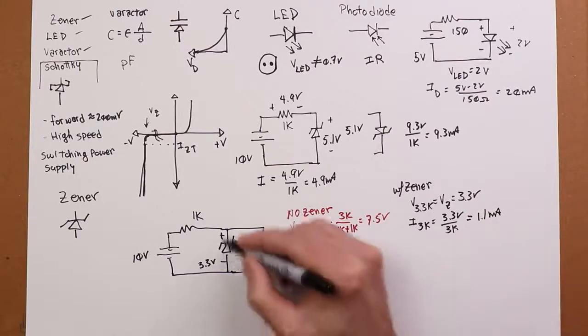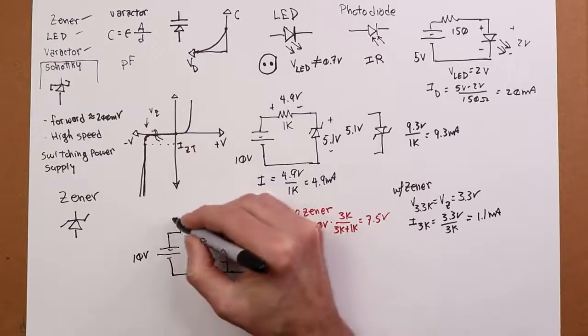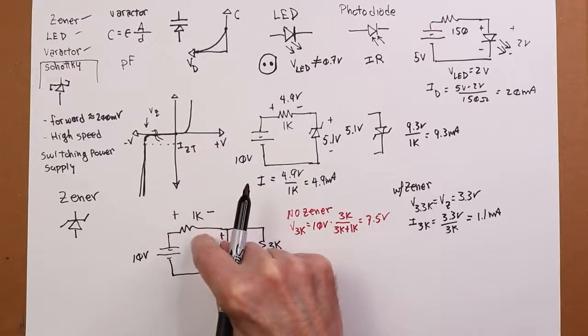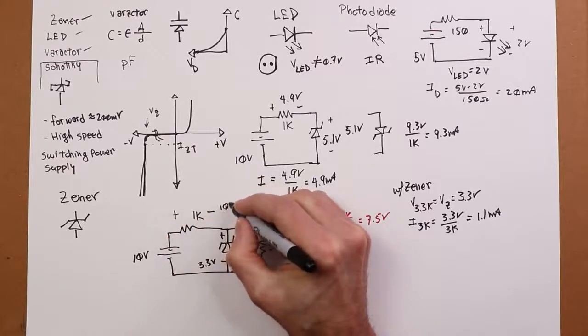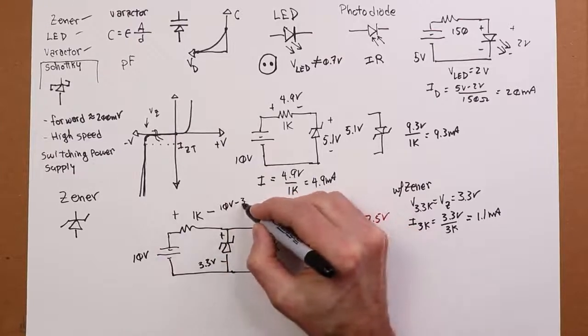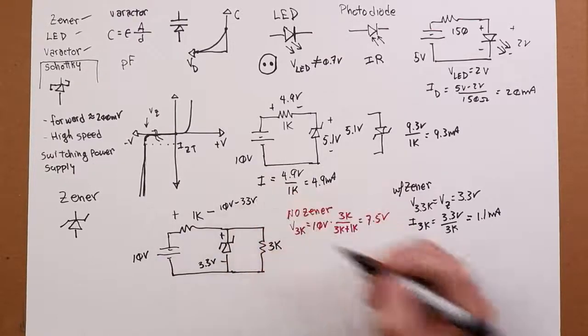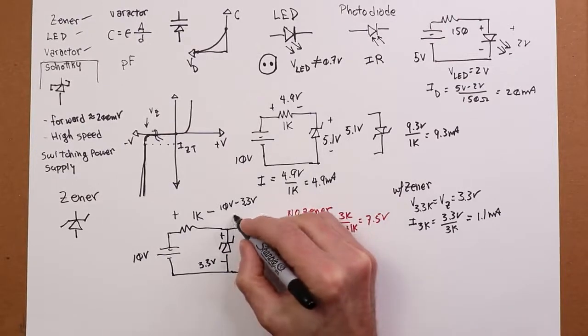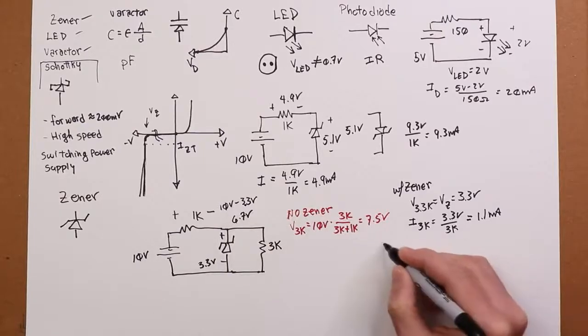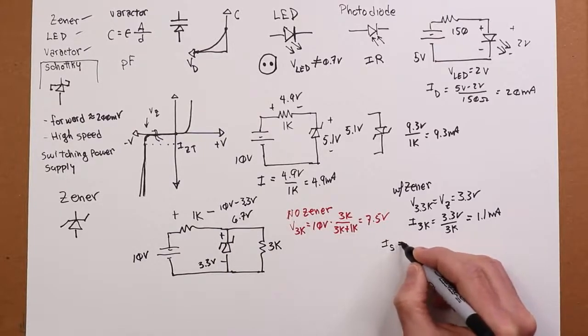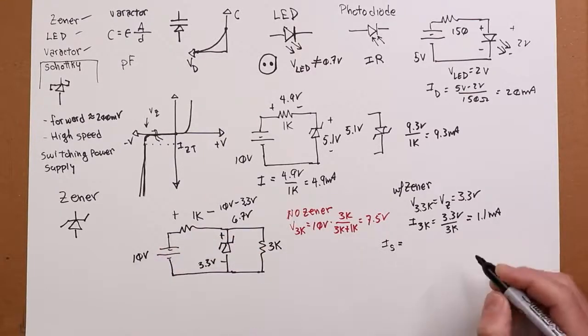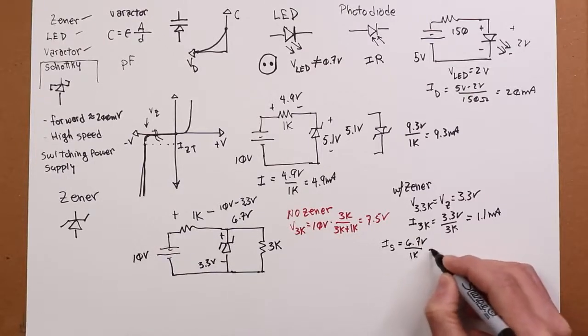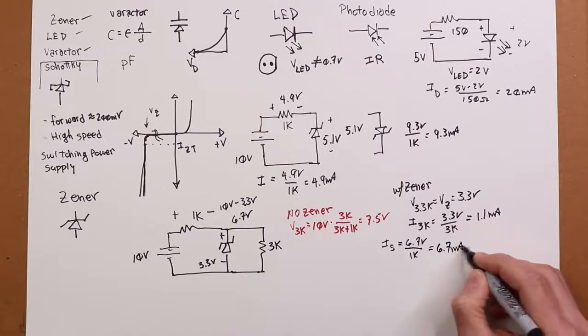Now, at the same time, if that's 3.3 and the source is 10, the remainder of that voltage must be dropping across the 1k. So this is going to be 10 minus the 3.3, that's going to be 6.7 volts. So the source current over here, back from our 10-volt source, is going to be 6.7 volts divided by 1k, or 6.7 milliamps.